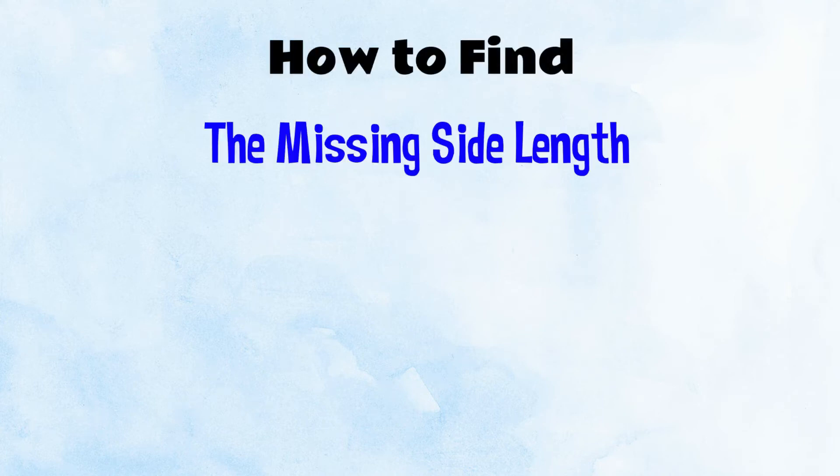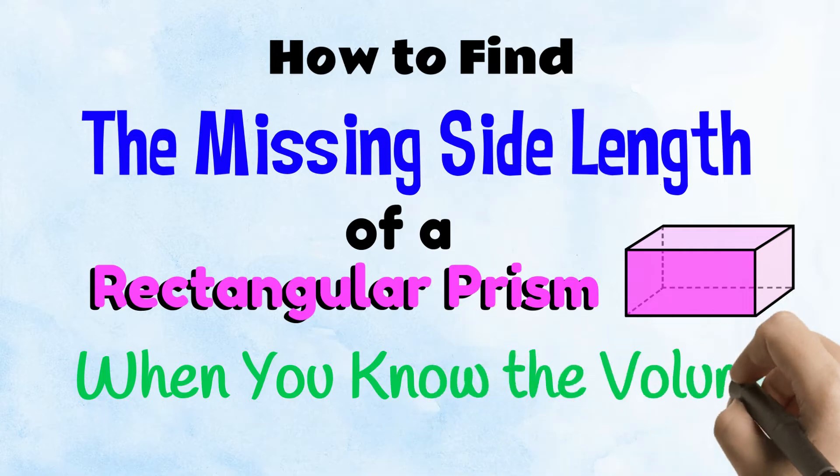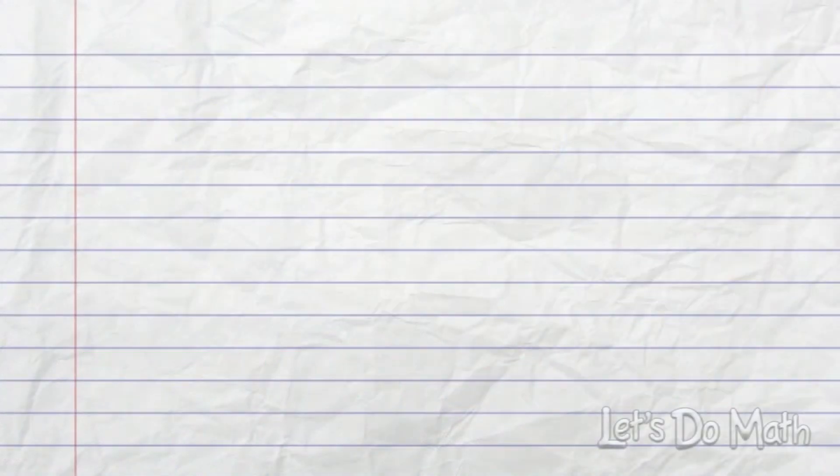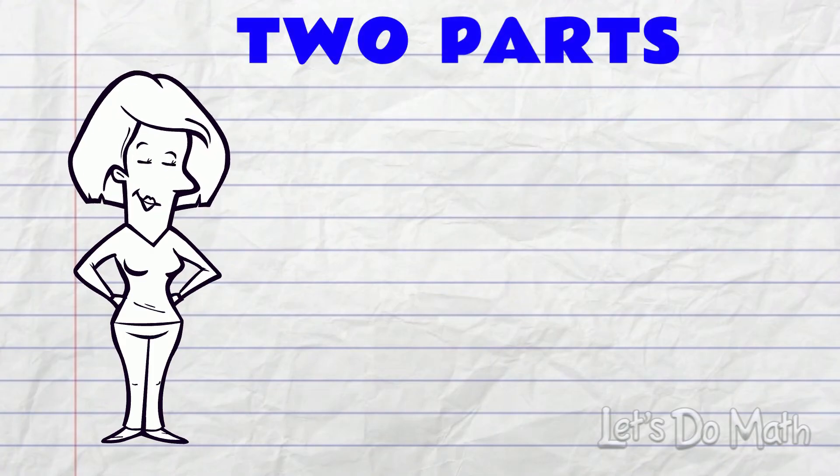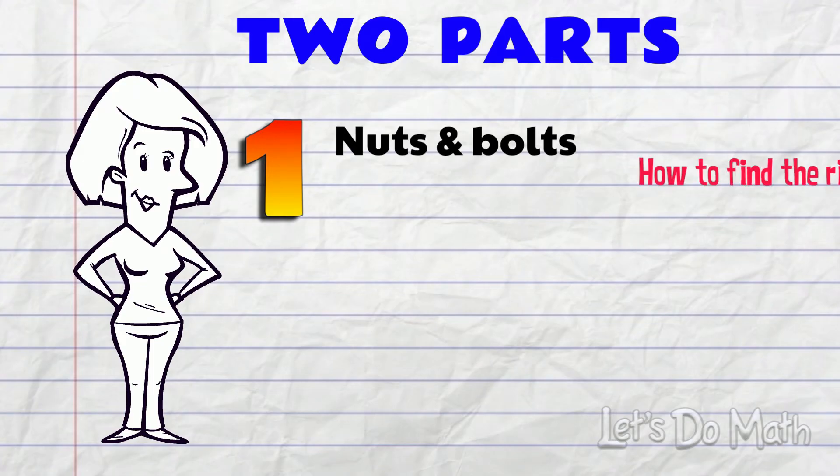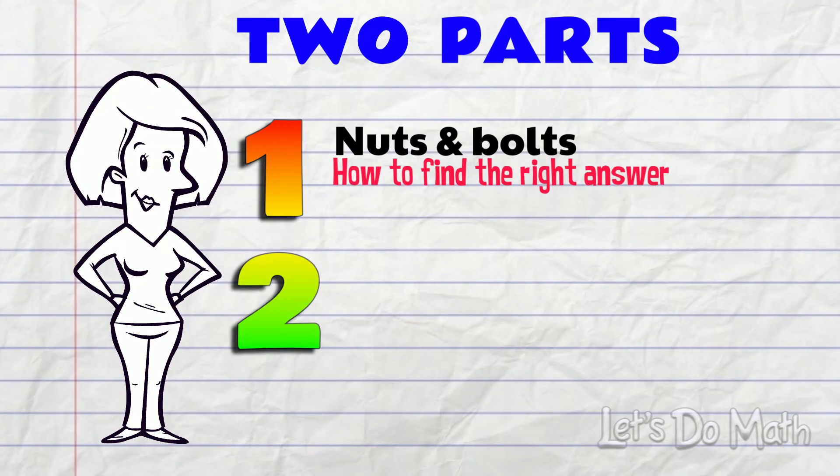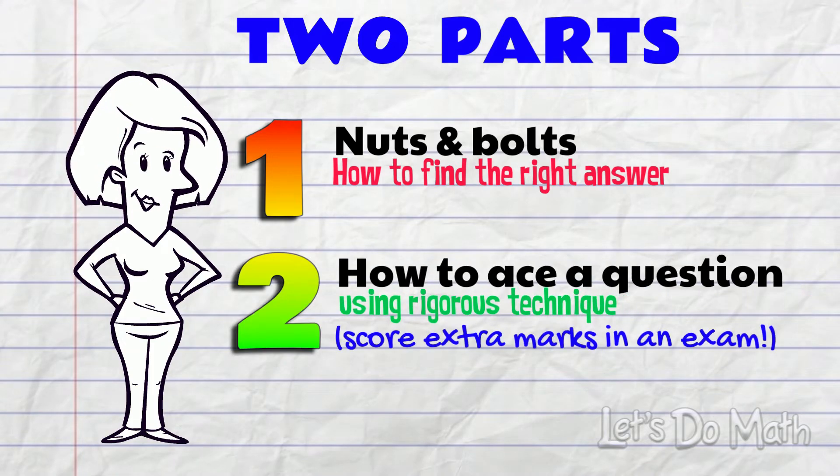How to find the missing side length of a Rectangular Prism when you know the volume, Part 1. For this piece of mathematics I'm teaching in 2 parts. Today, in Part 1 you get the nuts and bolts of it, how to find the right answer. Part 2 is the follow-on video, how to ace a question using rigorous technique which scores you extra marks in an exam.